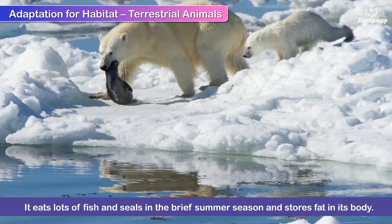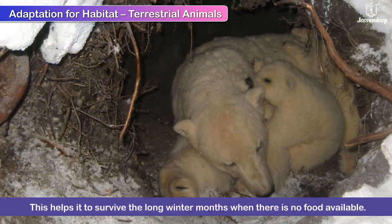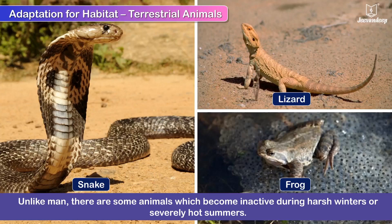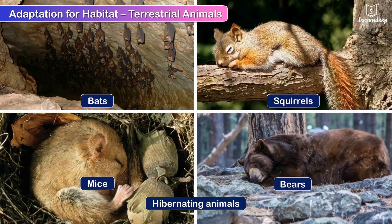The polar bear eats lots of fish and seals in the brief summer season and stores fat in its body, helping it to survive the long winter months when there is no food available. Unlike man, there are some animals which become inactive during harsh winters or severely hot summers. Animals like bats, squirrels, mice and bears sleep through the winters since their bodies are unable to adjust to the extremely low temperatures. These animals are called hibernating animals and their winter sleep is called hibernation.